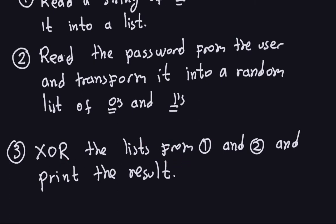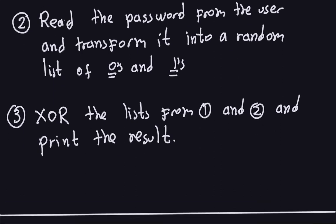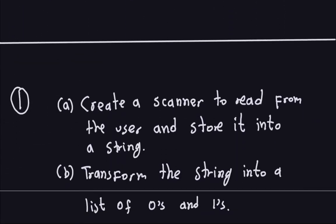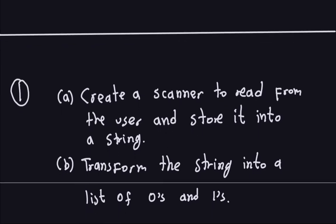The third part is: once I have the lists from steps one and two, I XOR them together and print the result. I'm using lists throughout — a list for the user's binary input, a list for the pseudorandom zeros and ones generated from the password, and a list for the output. To get the sequence of zeros and ones from the user, we'll create a scanner to read the input and store it into a string.